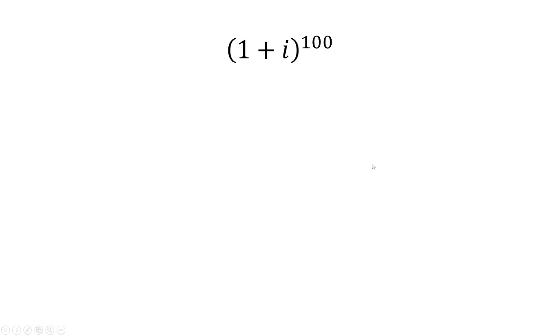So let's first start off with (1 + i) to the 100th power. I can rewrite this as ((1 + i)^2)^50, because when you have an exponent to an exponent, you multiply.